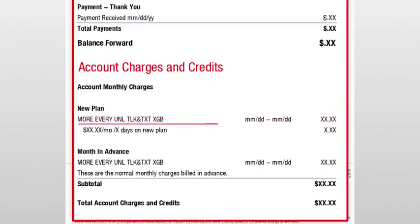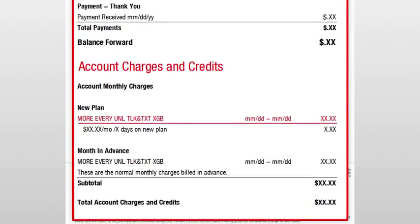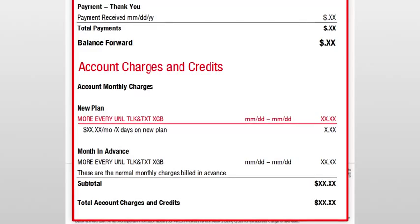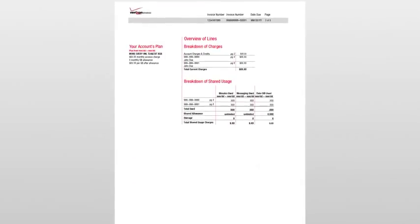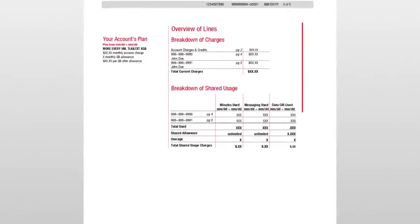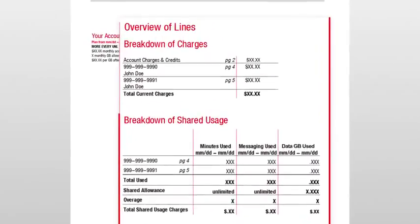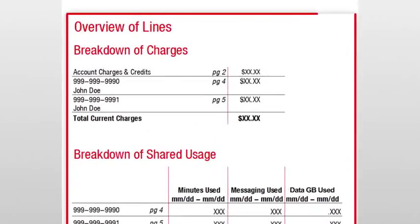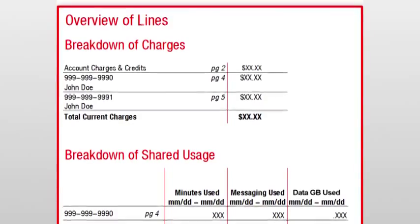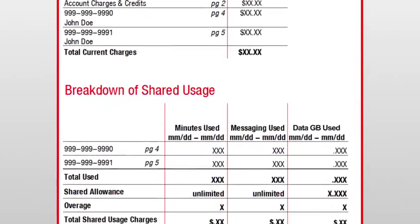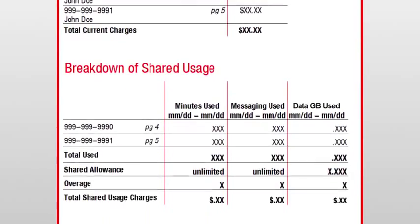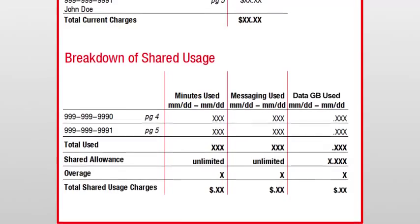Please keep in mind, you may see prorated or partial month charges if you have made any changes to your account during the previous billing period. The third page gives you an overview of lines on your account, which includes information about your plan, including a breakdown of charges for each line of service and a breakdown of shared usage that may include voice, messaging, and data.